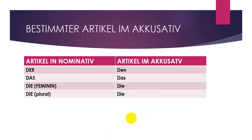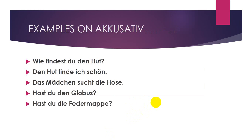Now we're going to have some examples on the accusative. The first example: 'den Hut.' As we remember, 'Hut' — the article in nominative for 'Hut' is 'der.' So in this sentence the articles are in the accusative, so 'der Hut' turns to 'den Hut.' In the question: 'Findest du den Hut?' — how do you find the hat? We are talking about the hat.